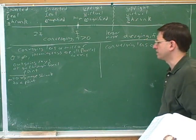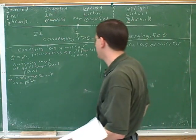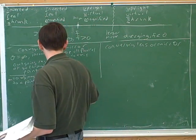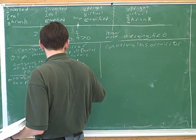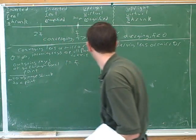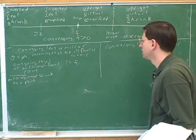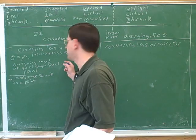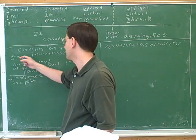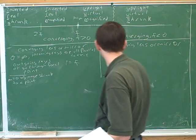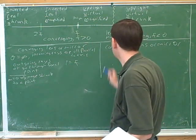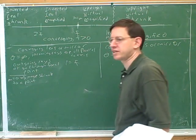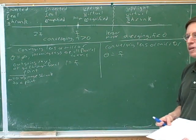Let's go back to a converging lens or mirror. We saw that if the object is at infinity, the image is at the focal point. Well, let's think about the reverse case. Suppose the object is at the focal point — where would the image be?